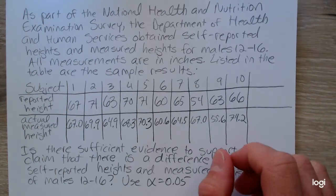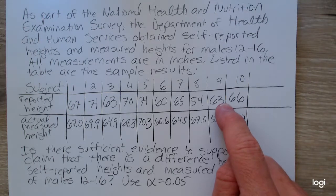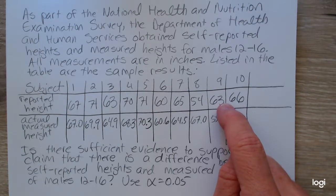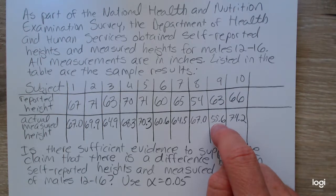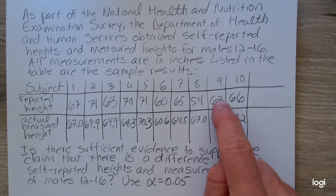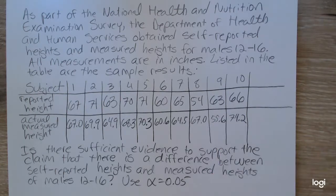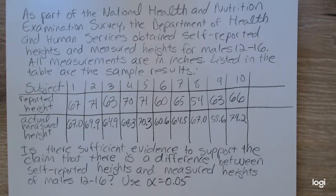For example, looking at subject 9, this subject said that he was 63 inches tall and when he was measured he was actually 55.6 inches. So this is paired data because there are two measurements taken on the same subject. We have a dependent case.